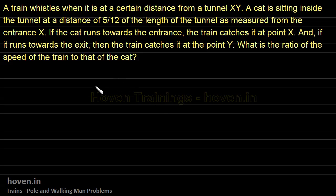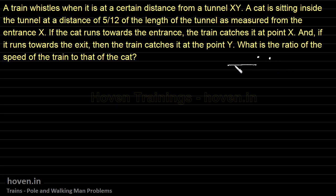Let us take a few problems that involve trains and a dot object. By dot object I mean these problems will involve one train and anything that doesn't have any length, like a pole, a boy walking, or a cat running. These problems will be of the type of trains and a pole or walking person. They will not involve two trains — only one train and one dot object. Let us take some simpler examples.